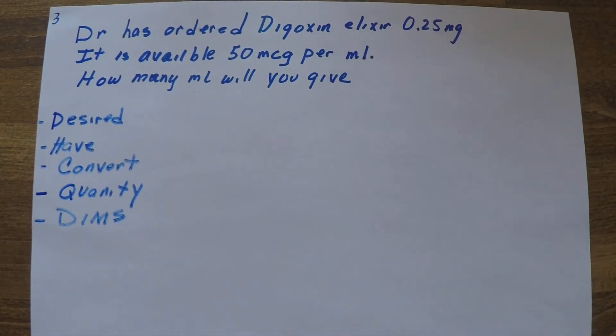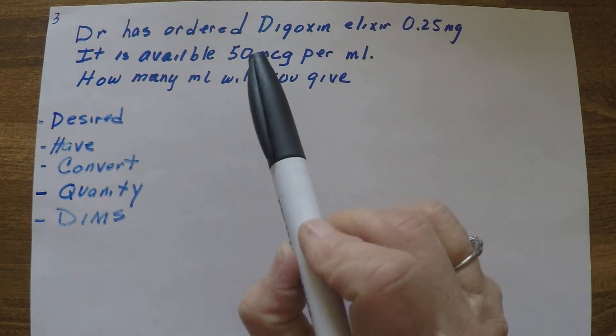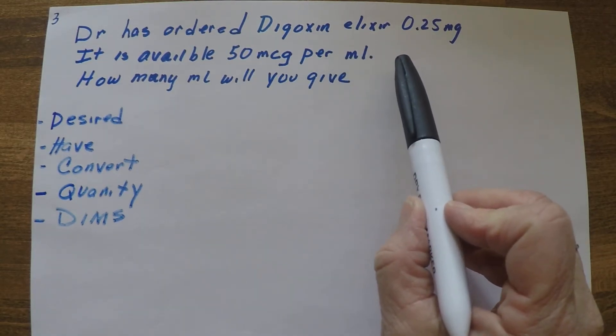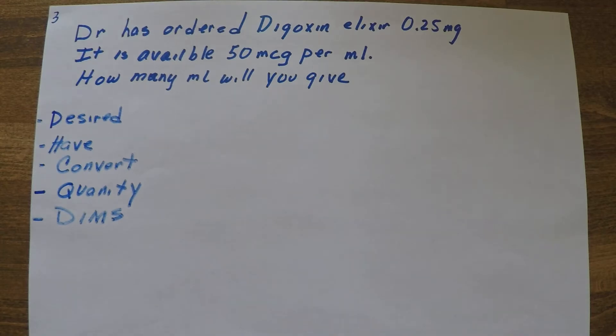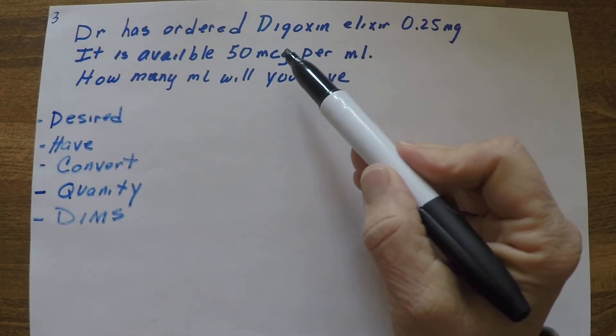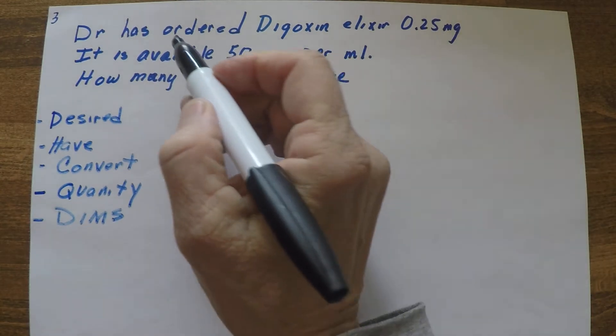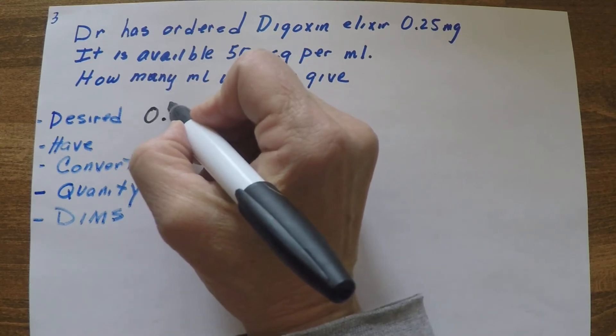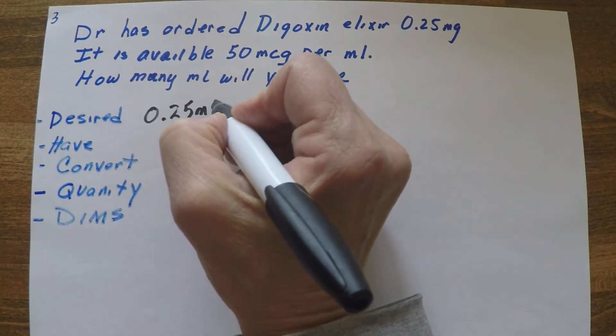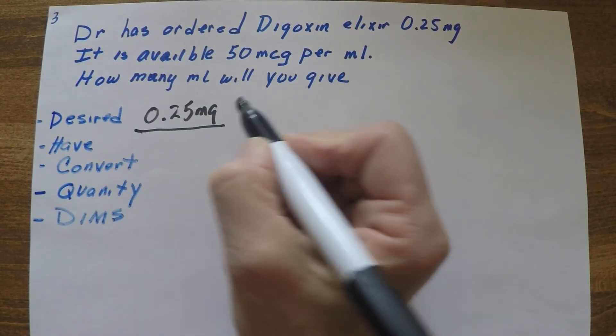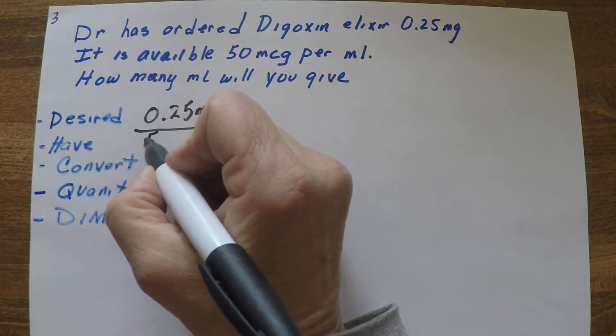So here we are with the liquid. The physician's ordered digoxin liquid elixir 0.25 milligrams. It's available in 50 mics per ml. So how many ml's will we give? So again, if you notice, this is another one where the units aren't the same, so we're going to have to convert. Our desired is 0.25 milligram, we have 50 mics per - our quantity is 1 ml.